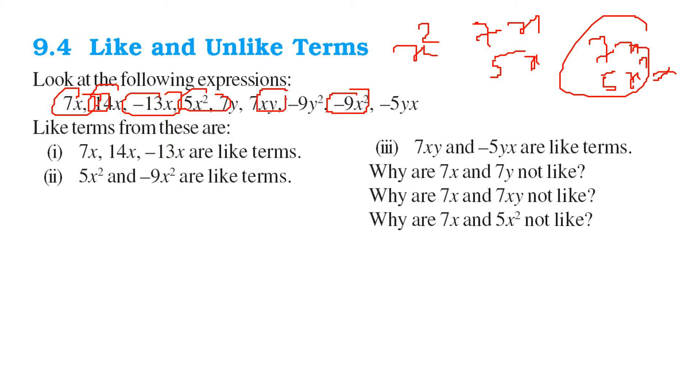In this case 7xy, so anything, you just have to see this variable. So 7xy, so anything with x, y, it can be any coefficient like minus 5 in this case. So these two are like terms.